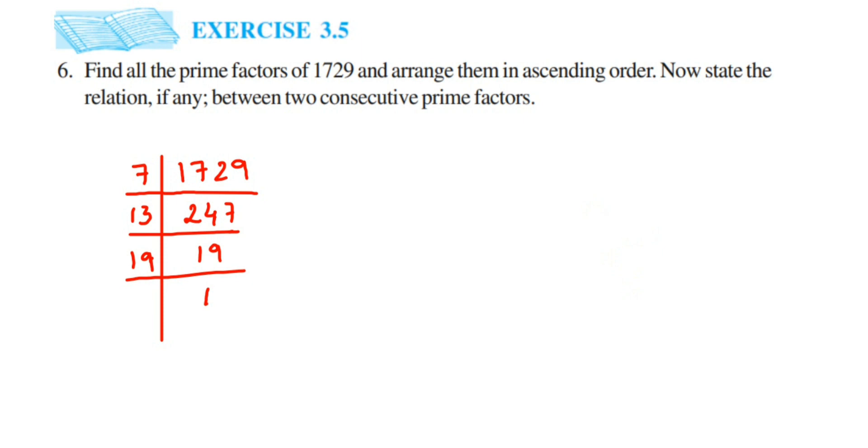Now we can express this in terms of prime factors. So 1729 will be equal to, whatever prime factors we got here, all these three numbers we should write down: 7 into 13 into 19. So we got this, we have expressed in terms of prime factors.